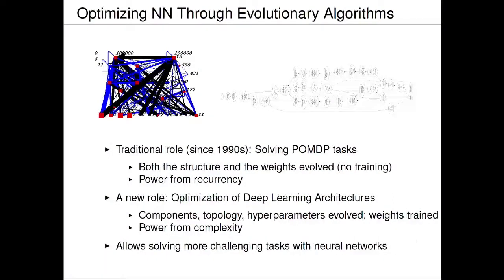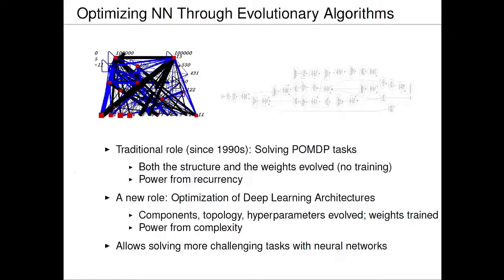There's the traditional role, the one we started with. Back in the 90s, we started evolving neural networks. The idea was to figure out how to utilize recurrency to solve POMDP-type reinforcement learning tasks. Those are hard to train with backpropagation, but if you use evolution and evolve both the structure and the weights of the neural network, you can tackle these partially observable tasks. The power comes from the recurrency — the network is recurrent, you can memorize things and deal with such tasks.